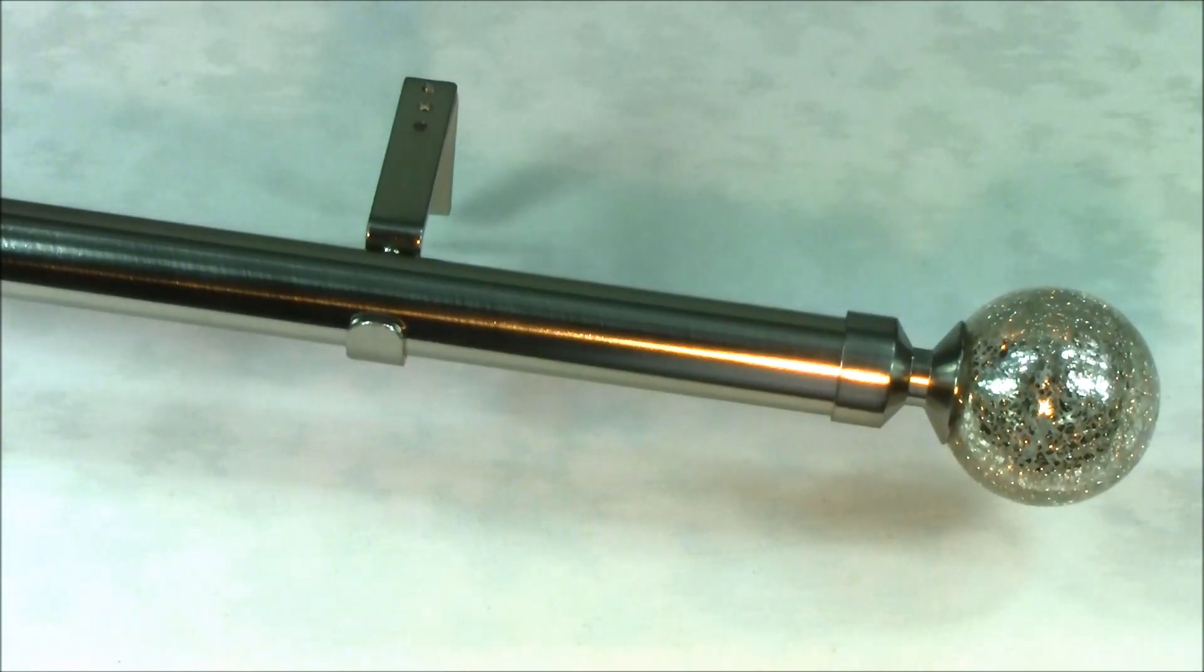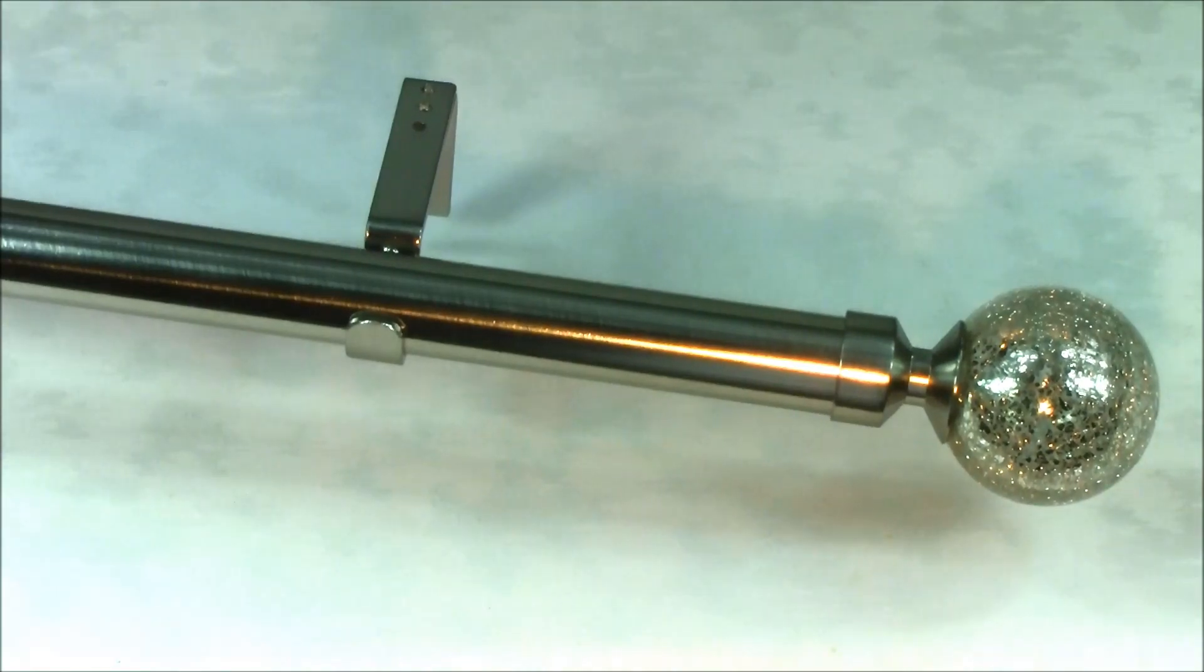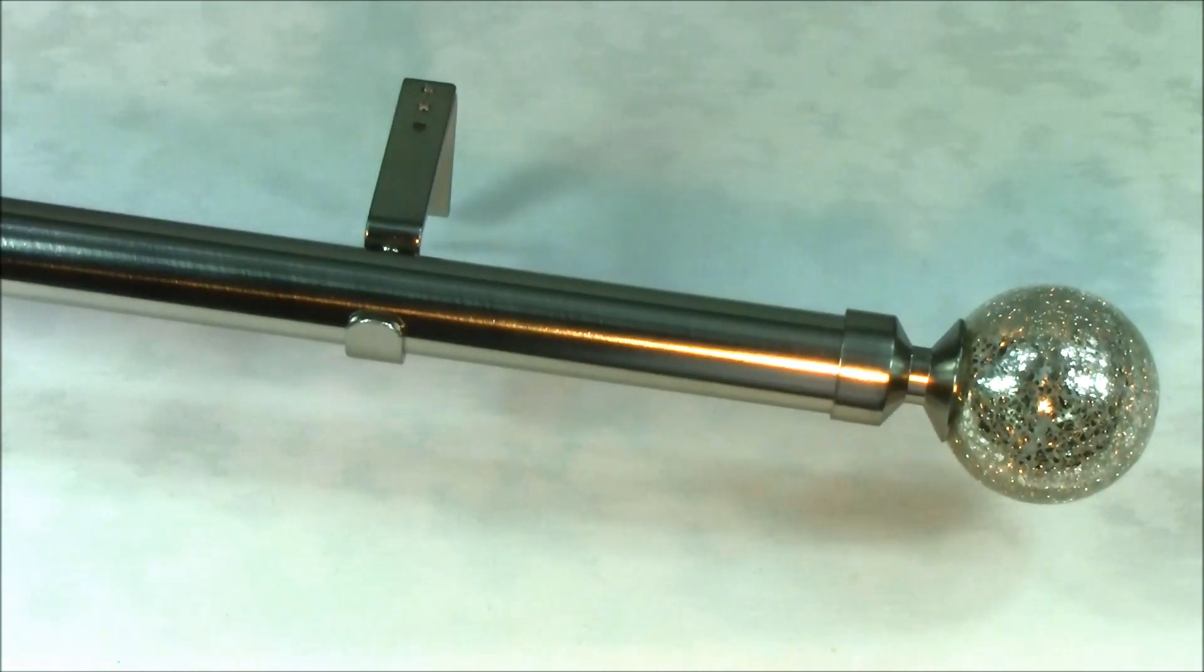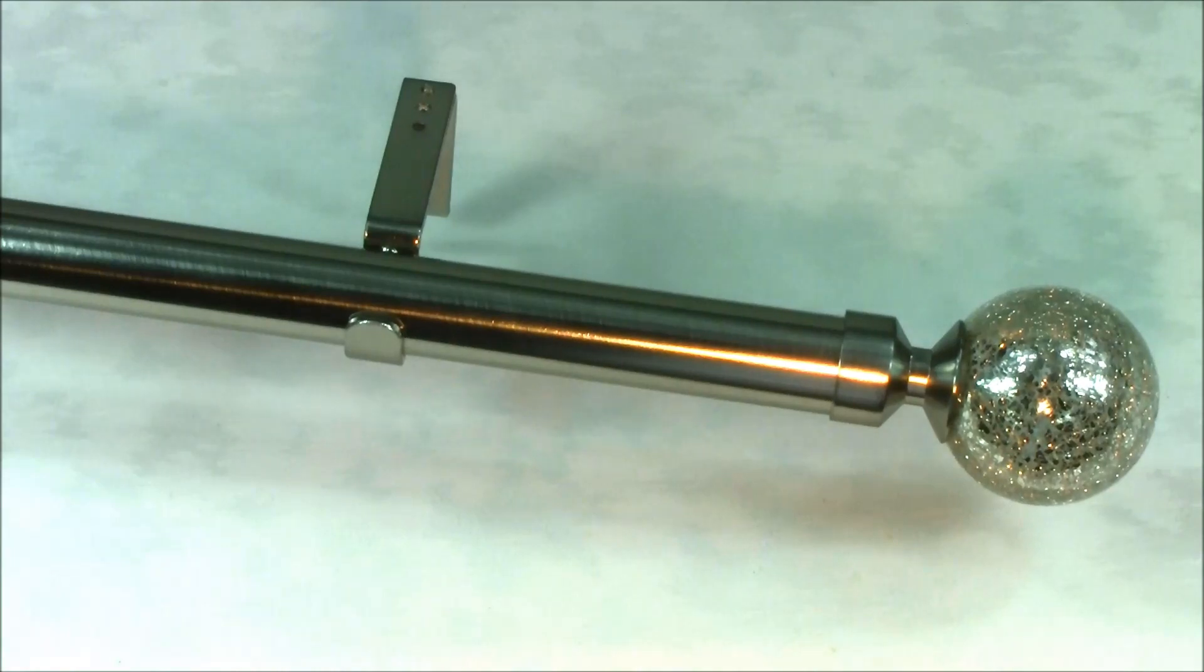This pole is suitable for light medium to heavy weight curtains and can be cut to the correct length if required using a fine tooth saw.